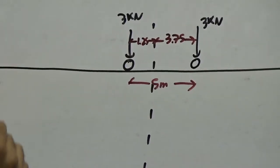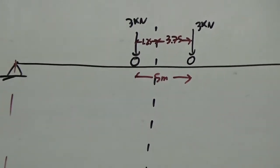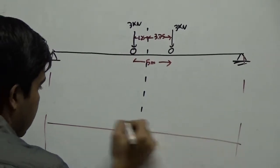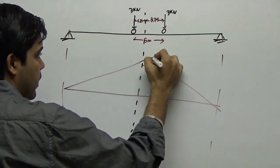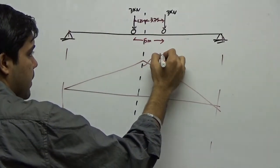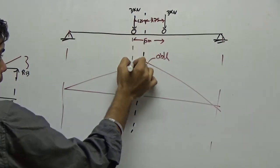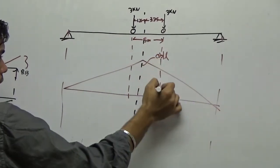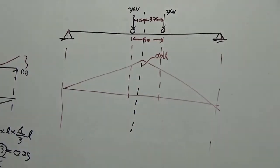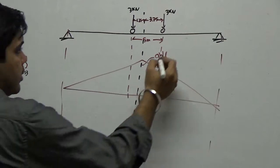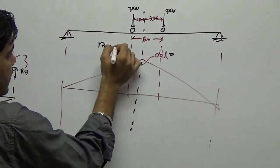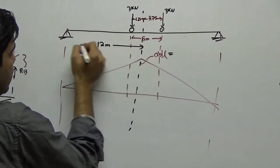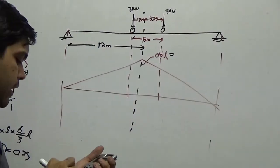The ILD for bending moment at the midspan section has a peak ordinate of AB by L. The beam is 24 meter, so this is 12 meter from here to the center and similarly 12 on the other side. So 12 into 12 over 24 gives me a peak ordinate of 6.